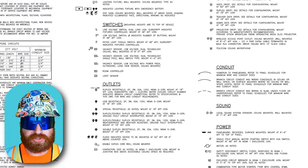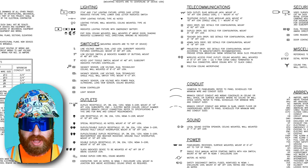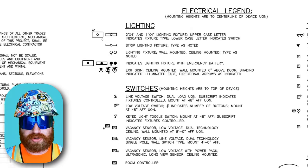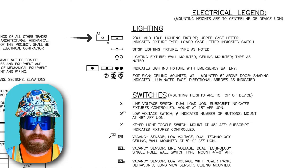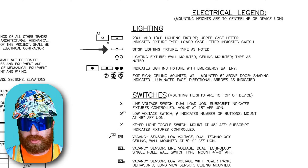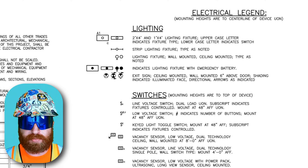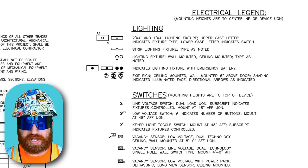The symbols section shows lighting, switches, outlets, telecommunication, conduit, sound, power, fire alarm, security, and miscellaneous symbols. Starting under lighting, the first entries show different symbols for different size light fixtures, followed by a symbol for strip lighting and emergency power fixtures. Newer or larger buildings have separate backup generators in the case of power loss, while some buildings utilize fixtures with battery backup or a combination of the two.